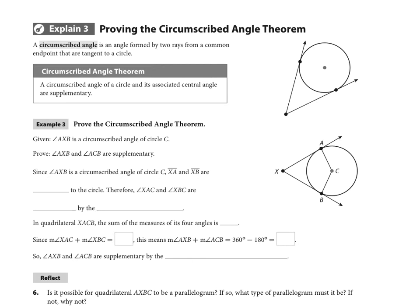Example 3 talks us through how to prove the circumscribed angle theorem. So we are given that in this diagram here, angle AXB is a circumscribed angle—so again there's the hat of the clown hat and dunce cap kind of thing—and it's a circumscribed angle of circle C.